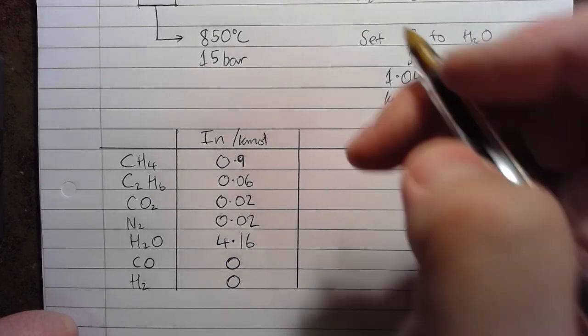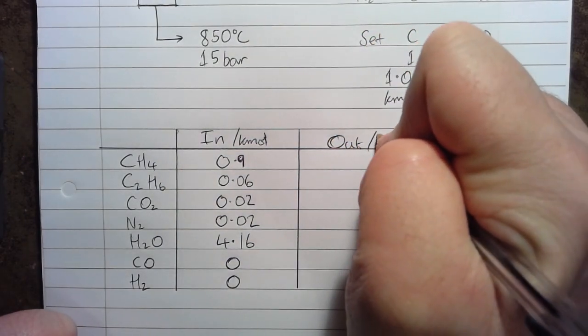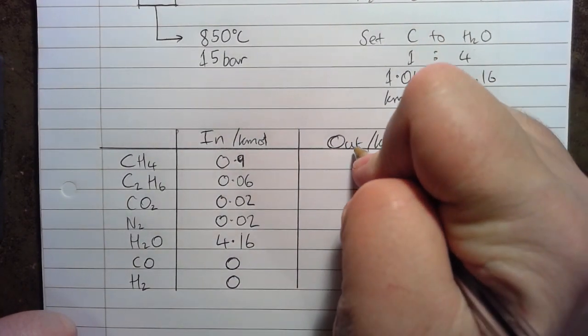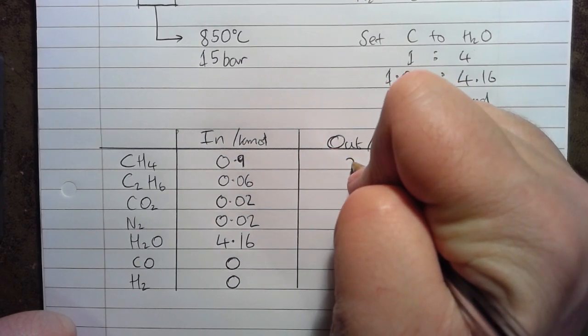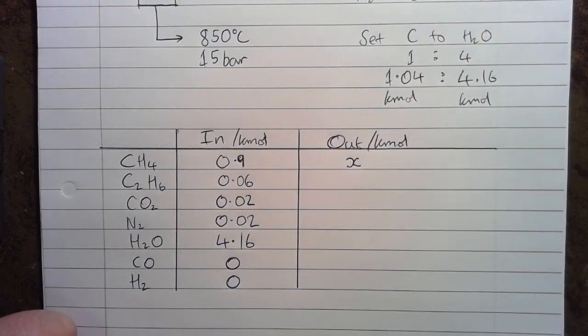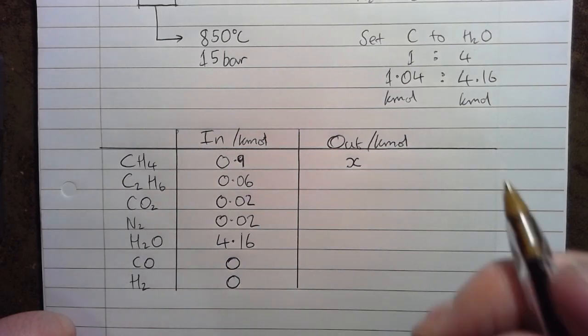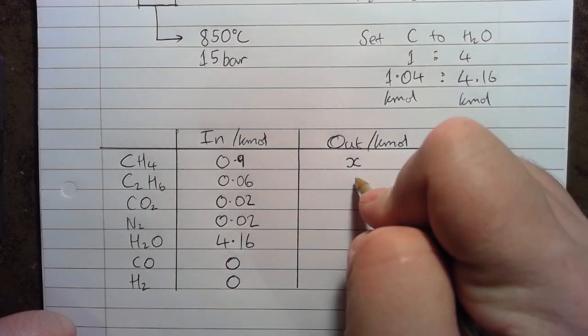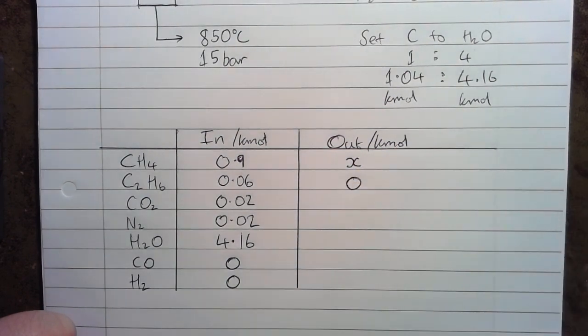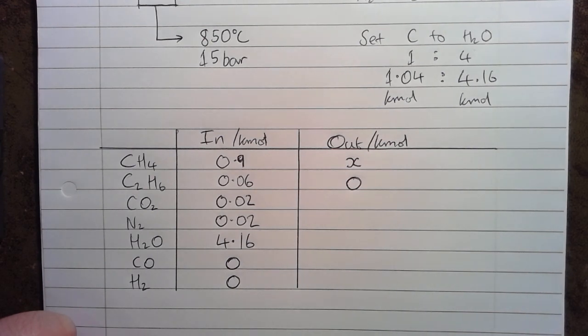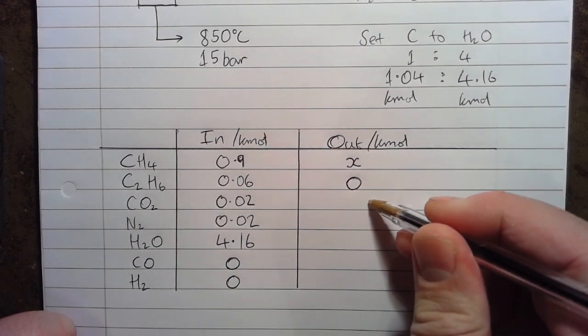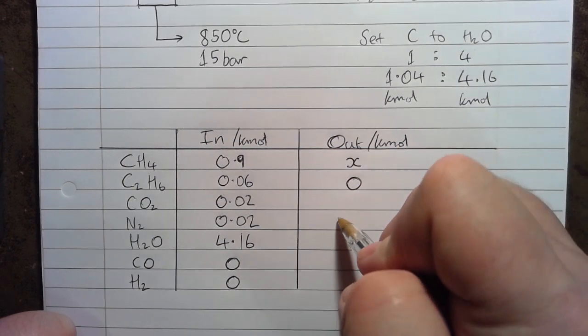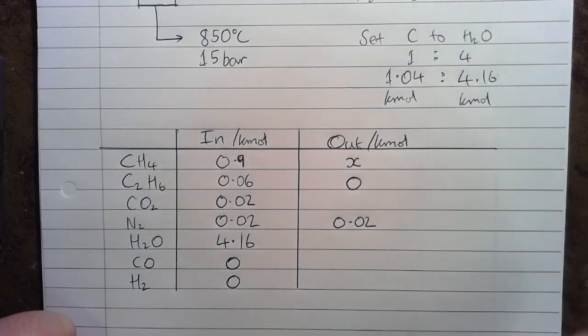In terms of what's coming out then, we are going to set the methane coming out as a variable X. We don't know this at this point, but we're going to give it a label X that we're going to solve for later on. The ethane, we're told to assume that all decomposes into CO and H2, so that is going to be 0 for the outlet. The CO2, we're going to solve by an elemental balance in the next video, using carbon. The N2 is inert, so that just comes out, so 0.02, what goes in comes out for that one.